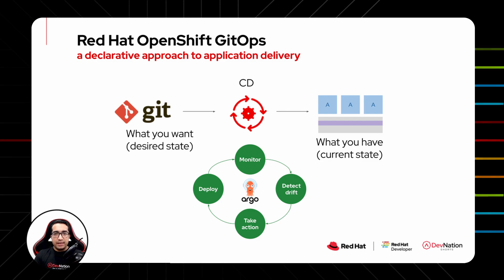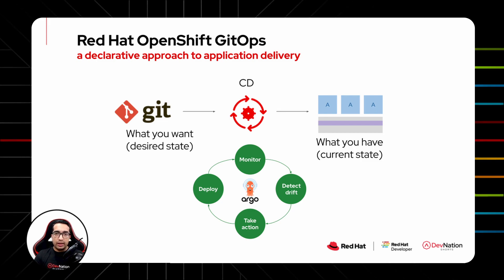OpenShift GitOps is available as an operator in the Operator Hub and can be installed in just one click. Once installed, users can deploy Argo CD instances using Kubernetes custom resource definitions.